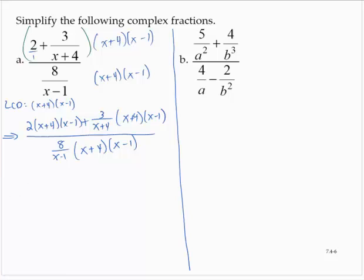Now some nice things happen. In the second term, the 3 over (x + 4) times (x + 4)(x − 1) — the (x + 4) factors reduce. And in the denominator similarly, the (x − 1) factors reduce. So I have 2(x + 4)(x − 1) remaining in the first term.